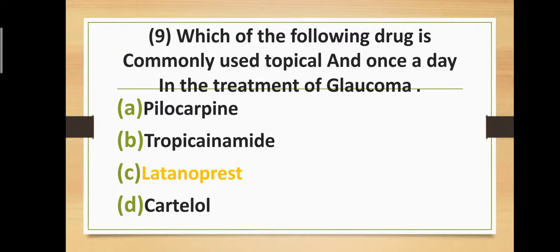Question number nine: Which of the following drugs is commonly used topically once a day in the treatment of glaucoma? Option A: Pilocarpine. Option B: Tropicamide. Option C: Latanoprost. Option D: Carteolol. Correct answer is Option C — Latanoprost is the drug used topically once a day in the treatment of glaucoma.